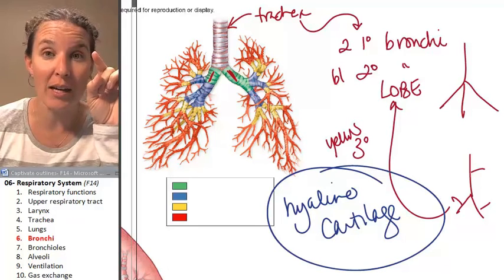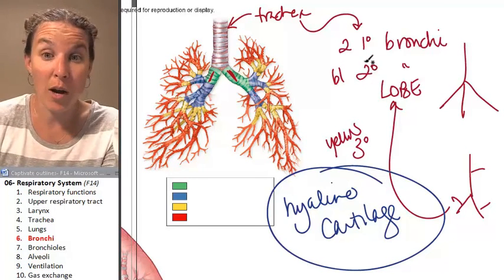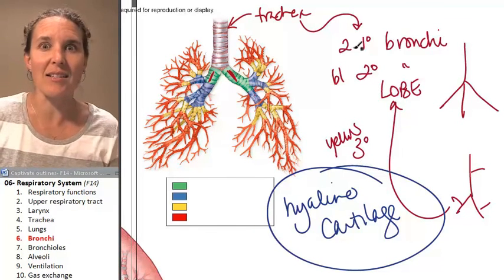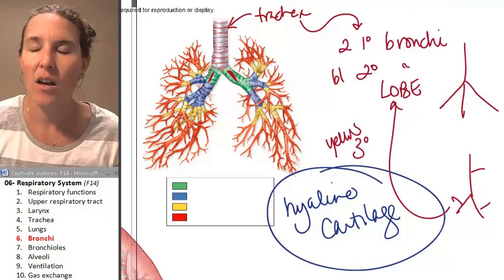you are palpating a bronchus of some flavor. Remember, whether it be a primary, a secondary, or a tertiary, it is a bronchus because the next thing that we're going to talk about does not have cartilage.